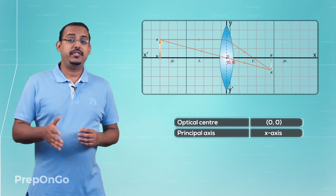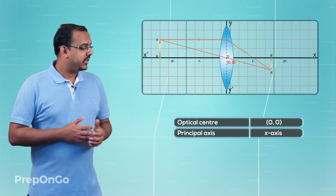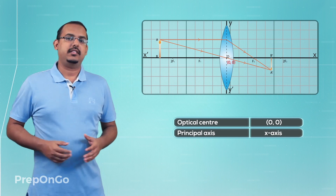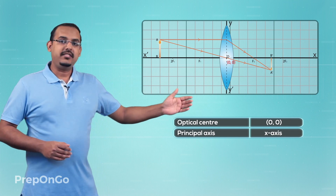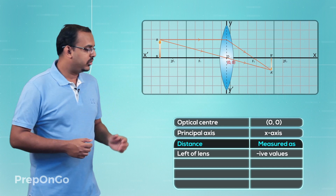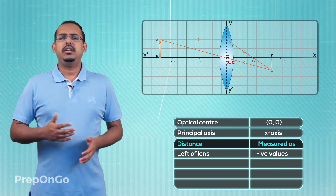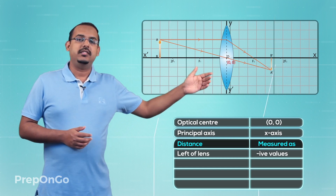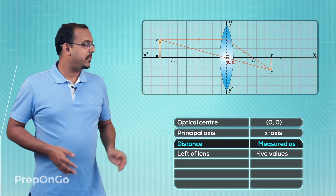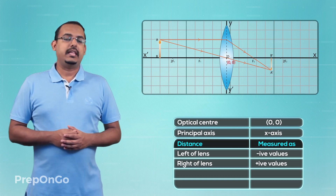Now since the optical center of the lens coincides with the origin of the Cartesian plane, which is 0,0, all the distances which are on the left side of the lens are in the direction of the negative x-axis. Due to that, all the distances that we measure to the left of the lens are always measured in negative values. So the distance of the object from the lens is always measured in negative values. Similarly, all the distances to the right of the lens are in the direction of the positive x-axis, so all the distances which are measured to the right of the lens are always measured in positive values.